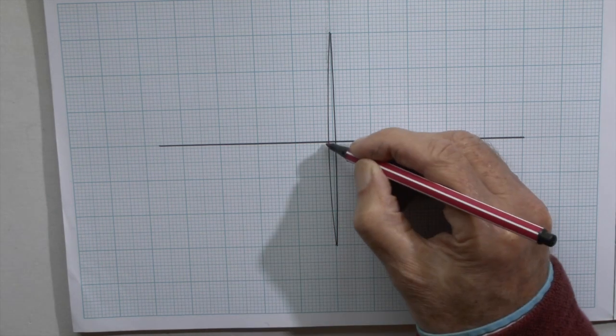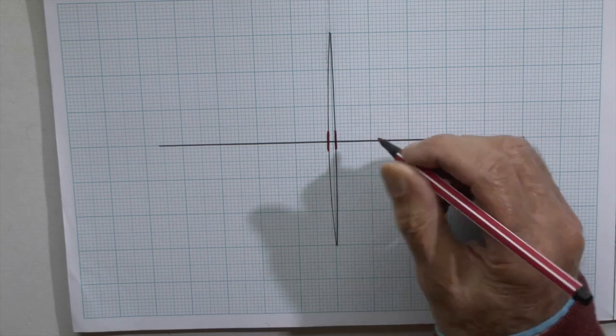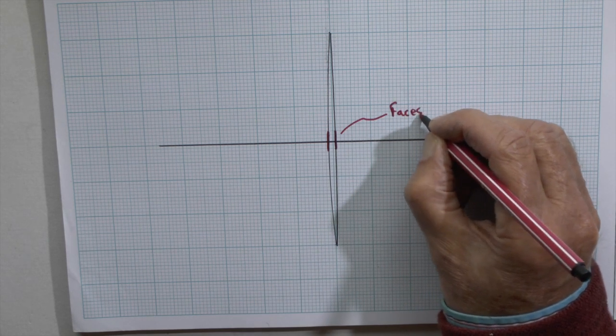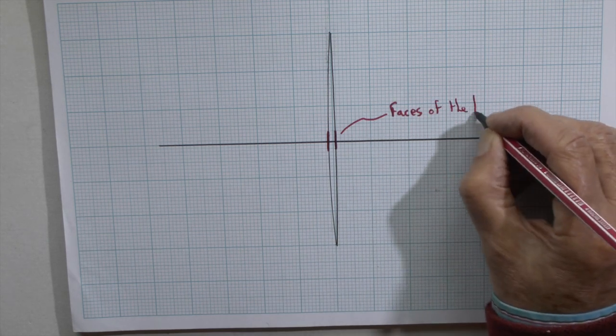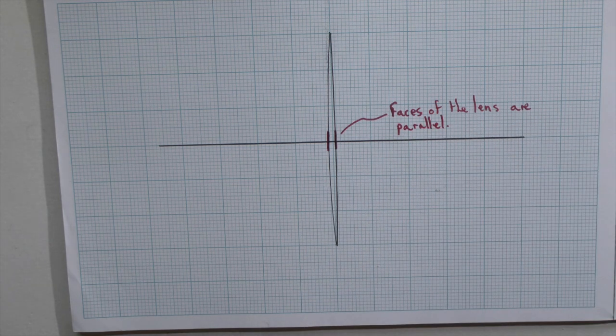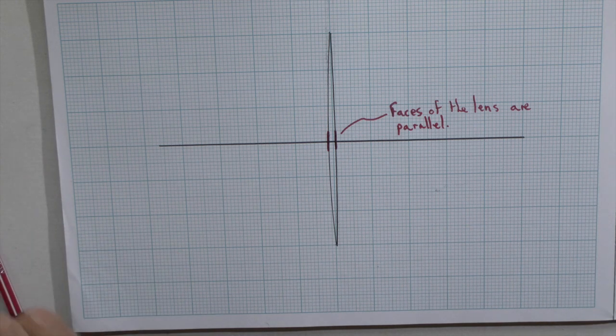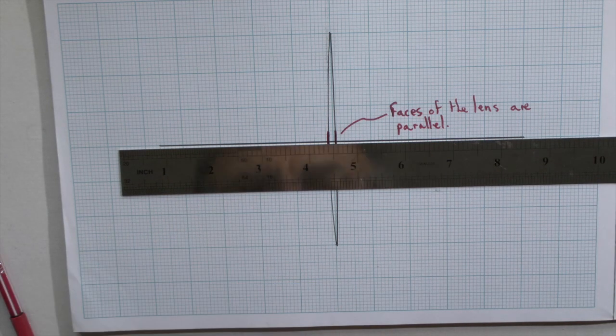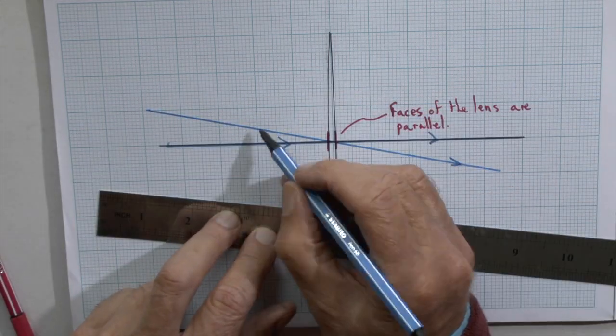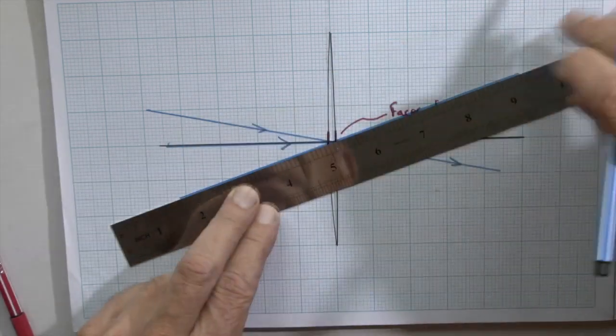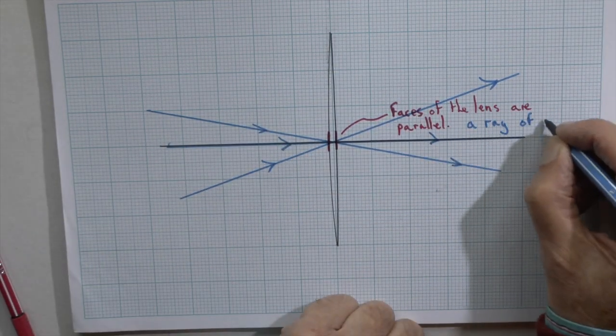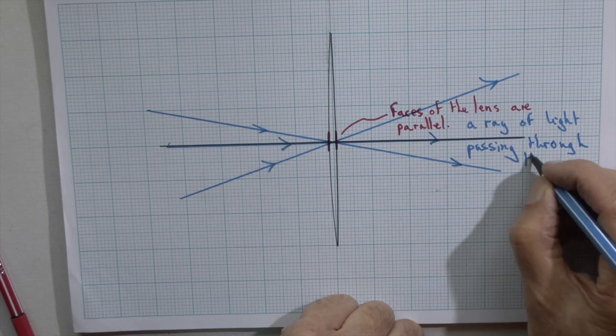A key fact that we use when we construct ray diagrams is that the little bit of glass at the centre of the lens has parallel sides. The faces of the glass of the lens are parallel and therefore when a ray of light goes through it is not refracted, it is not deviated. That applies not only for a ray of light going along the principal axis but for one which is coming in at an angle either one direction or the other.